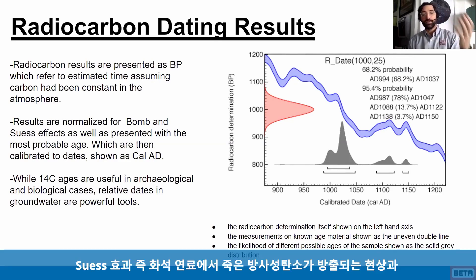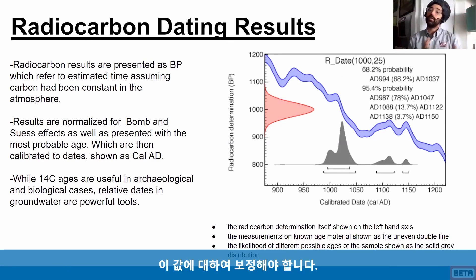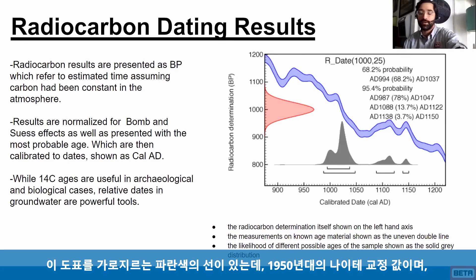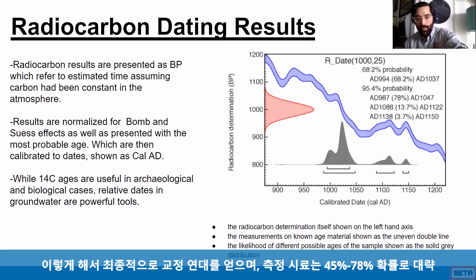Once we have that, we have to accept the fact that due to the Suess effect — which is dead radiocarbon being released by fossil fuels — and also the nuclear bomb tests, which actually brought a lot of active radiocarbon into the atmosphere, we have to make corrections for that. This blue line that goes across the chart shows tree ring correction from the 1950s and estimates the amount of radiocarbon present.